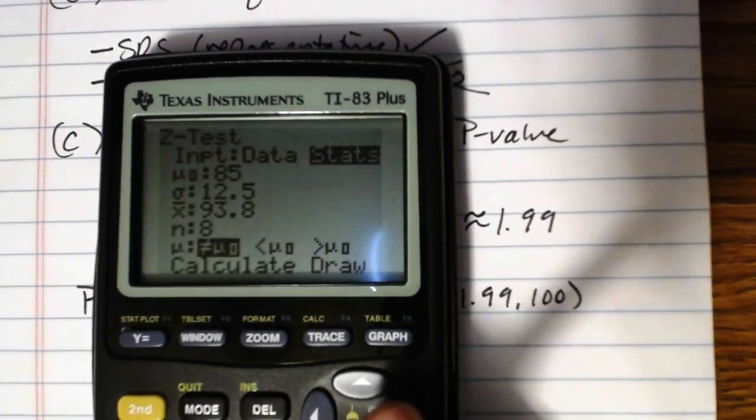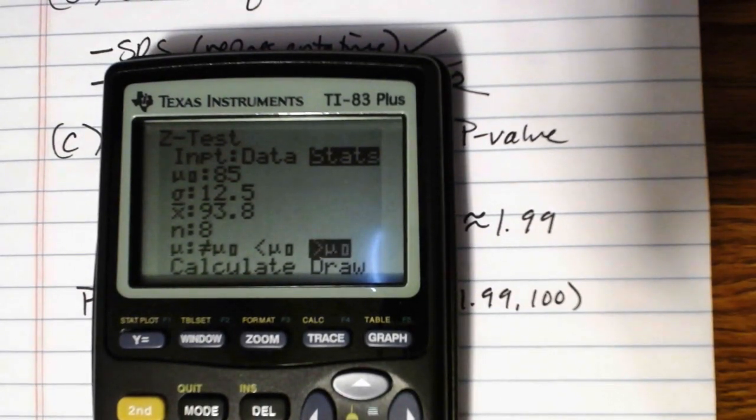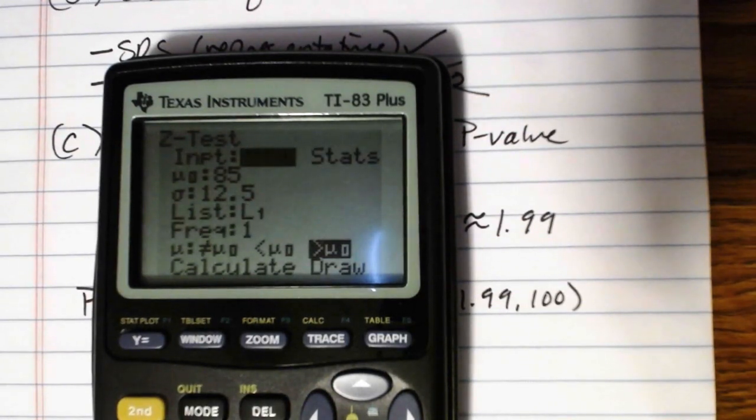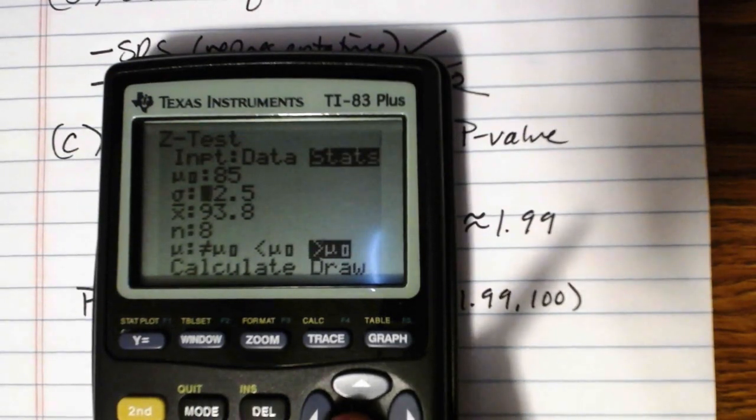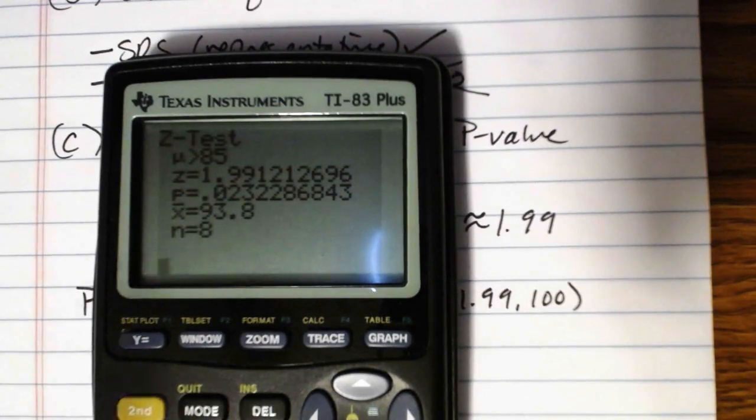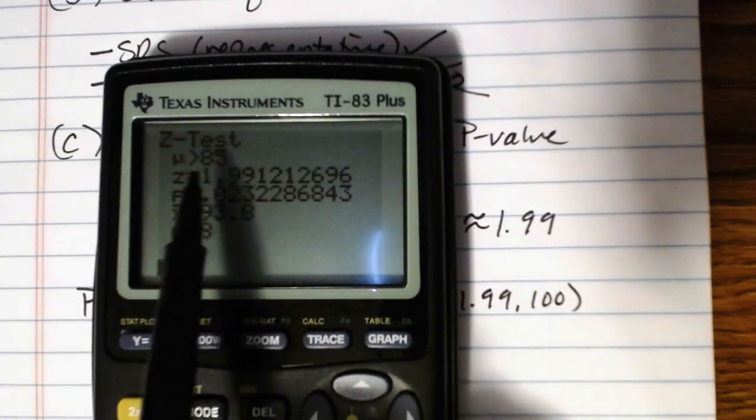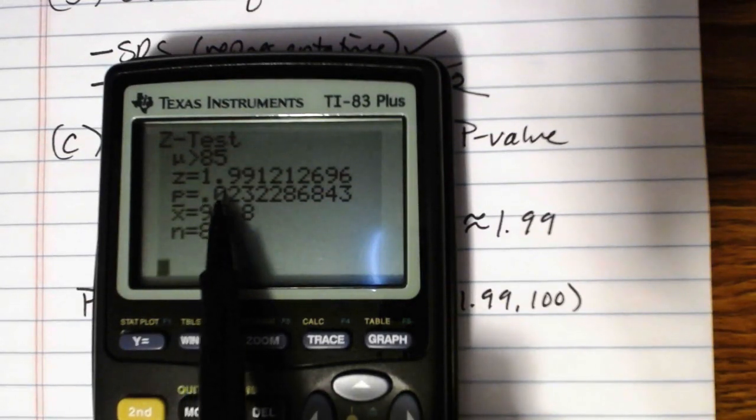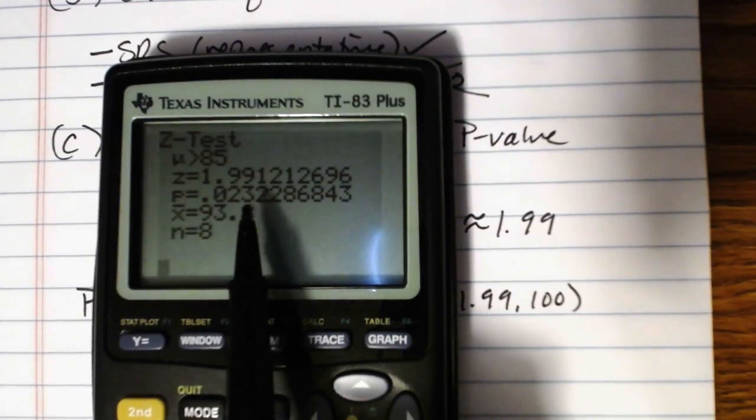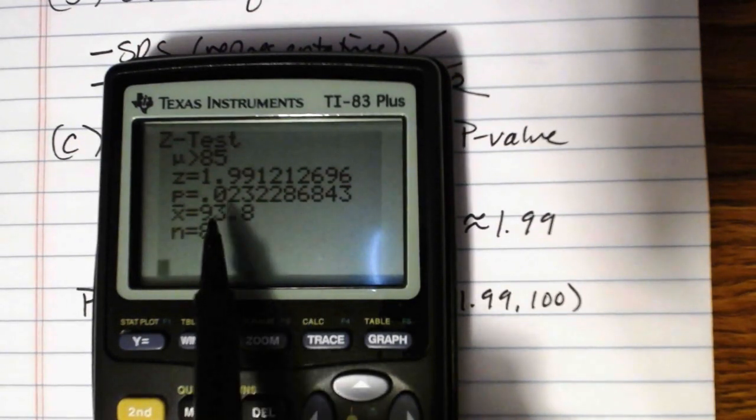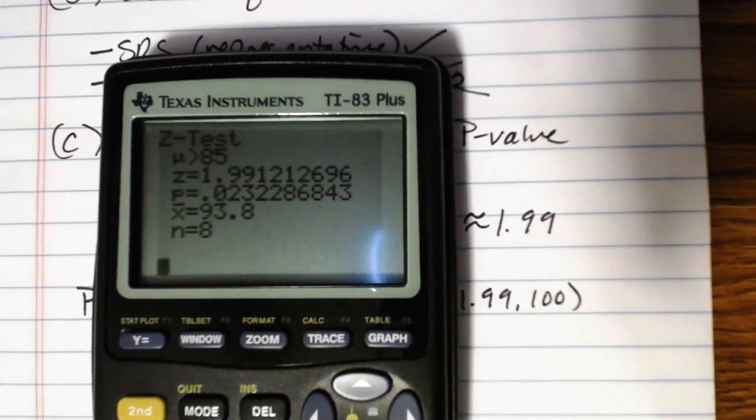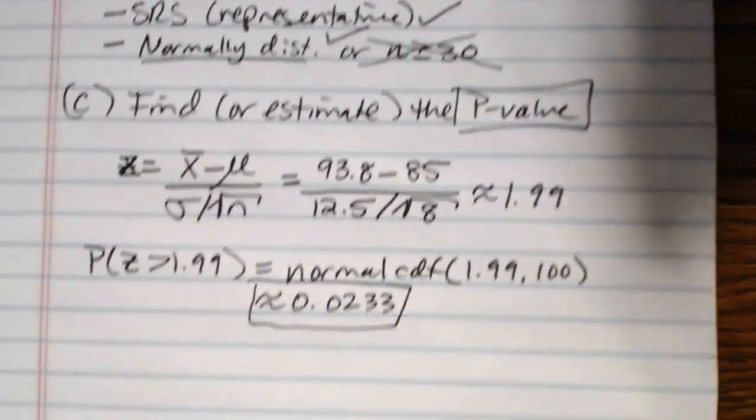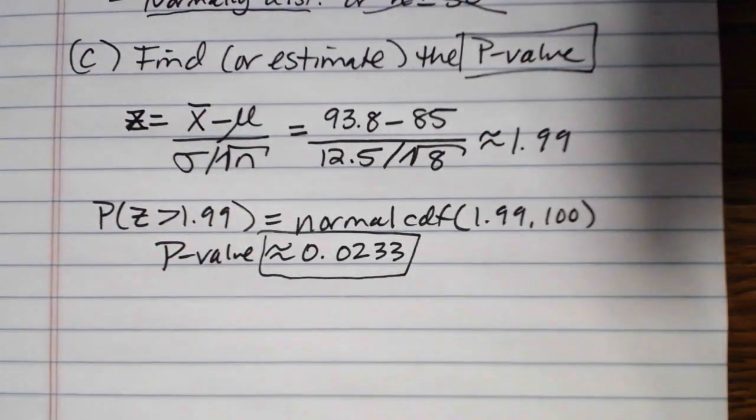And then here on this line, it's asking you what did your alternate hypothesis look like? Did it have a not equal to, a less than, or a greater than? And ours had a greater than. And then once you get all that configured, you would calculate. Once you get it all set up, then you press calculate. And you'll notice it gives you first what your alternate hypothesis looked like: mu is greater than 85. Here's that Z score that we just found, 1.99. And then here is our p-value, 0.0232. So regardless of whether you do this in the calculator or by hand, you're going to get that same p-value. And that is the thing that we're trying to find. Our p-value is approximately 0.0233 or 0.0232.